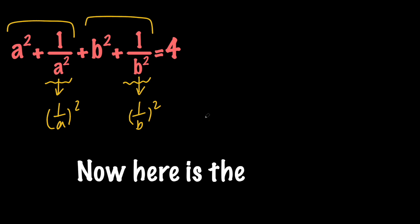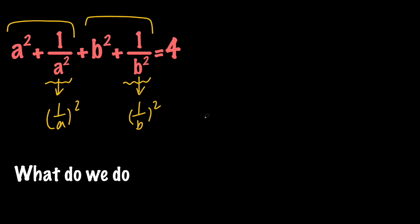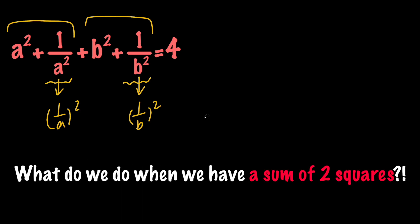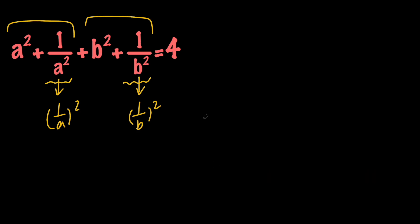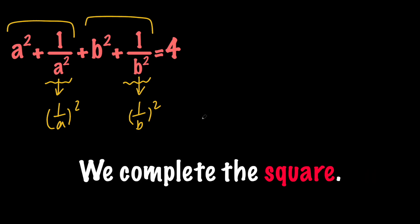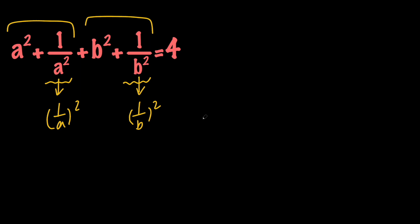Now here's the question: what do we do when we have a sum of two squares? We complete the square. And here's how we do it.